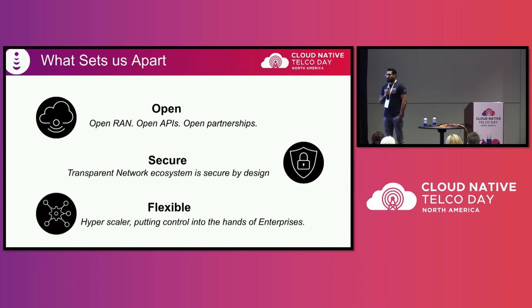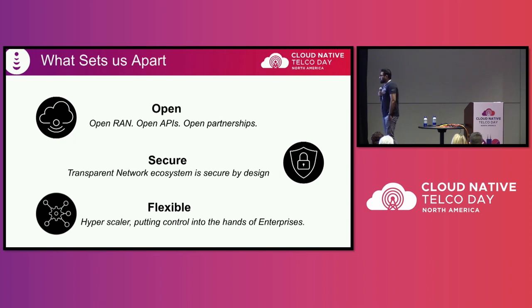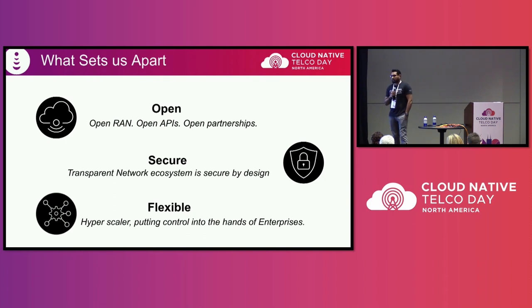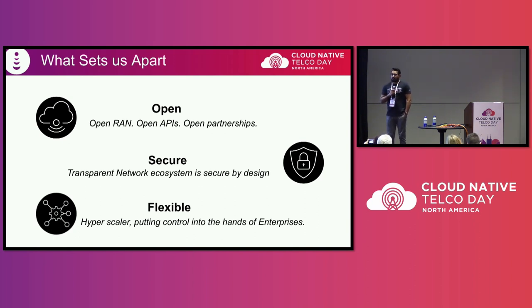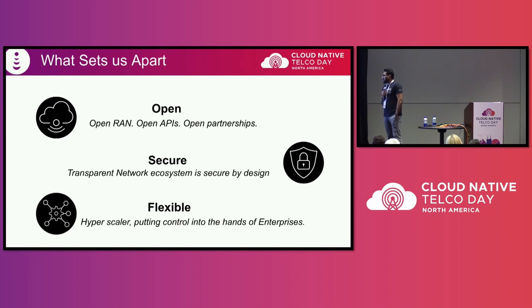All the network data could be exposed to our enterprise customers to optimize their applications and provide the best services for our end customers. The last principle is flexible. The network is distributed across the whole U.S. and we have 18,000 edge nodes. We don't want to control it for enterprise customers — we want to give the power to them because they know the use cases they want to run on the network better. We are building a kind of distributed hyper-scaler with NDCs, RDCs, edge nodes, and nodes at our towers, so enterprise customers can optimize the applications they want to run on our infrastructure.